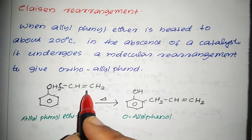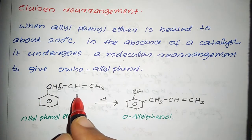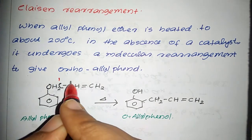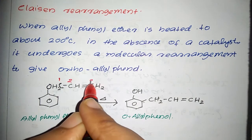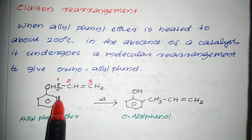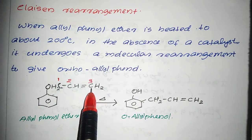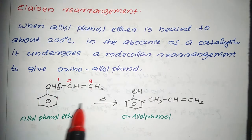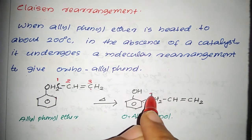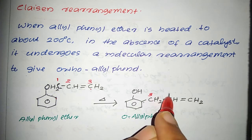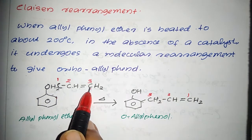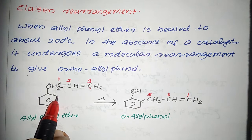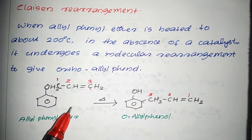This is carbon 1, 2, 3 in the allyl group. This carbon is attached here, so the numbering goes 3, 2, 1 — and this carbon 3 is attached here at the ortho position.